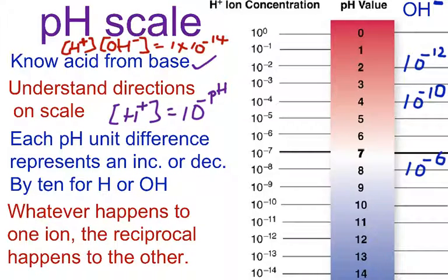We must understand the directions on the scale. Each pH unit difference represents an increase or decrease by a factor of 10 in terms of H+ or OH-.